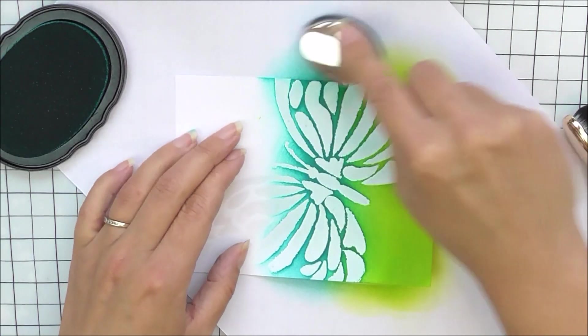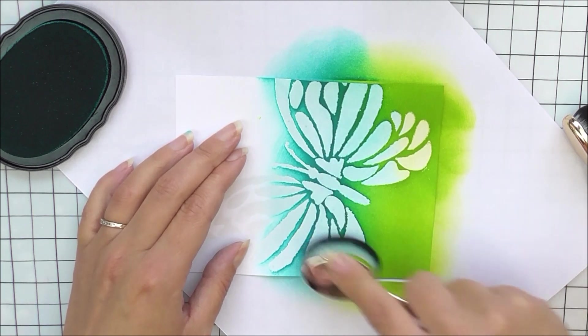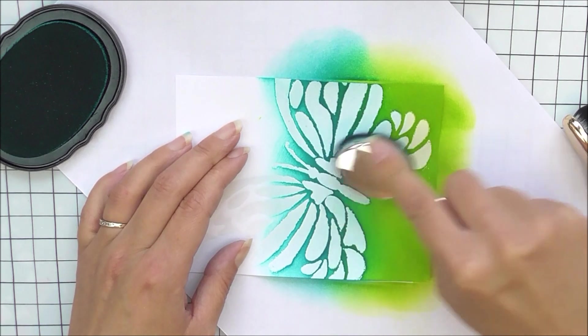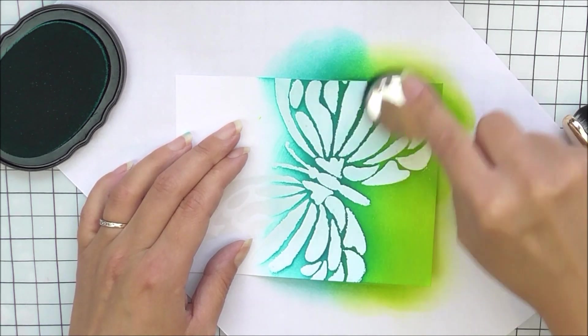I'm just going to add this to the center of my panel and I'm going to blend it into that green a little bit, just to make the green and blue merge together a little bit more and create another further color.